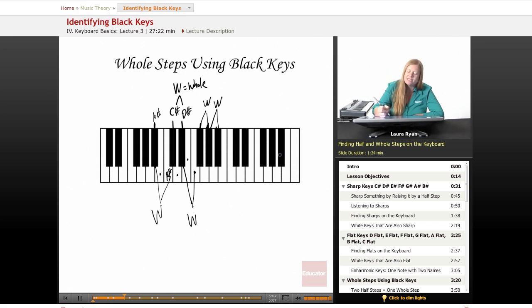Let's do the same thing using flats. So this is also called, in addition to being called D sharp, it's also E flat. These are the same. E flat to E natural is one half step. E natural to F is another half step. So, two half steps equals one whole step.